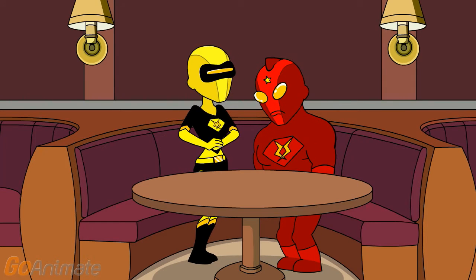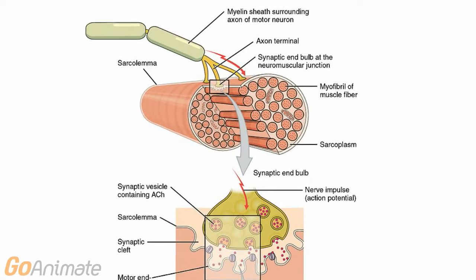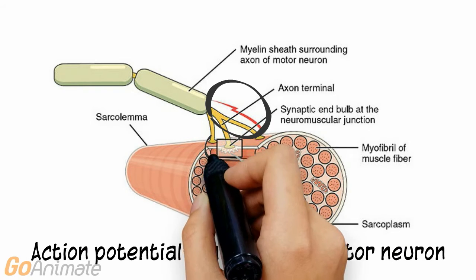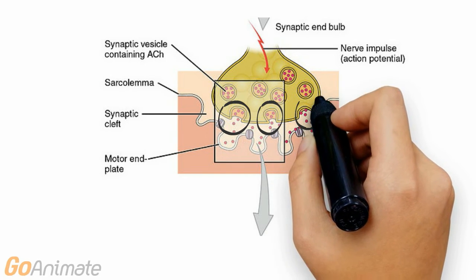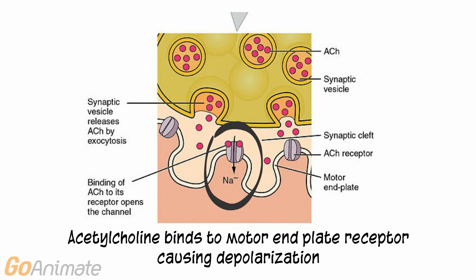Remember, the goal is to get actin and myosin together, but they need a little help. Help begins at the motor neuron, which is connected to muscle at an area called the motor endplate. The nervous system sends a message called an action potential down the motor neuron. The motor neuron responds by releasing the neurotransmitter acetylcholine, which floats across the synaptic cleft to the motor endplate on the muscle. It then binds to receptors, causing sodium channels to open. Sodium flows into the motor endplate and it depolarizes.